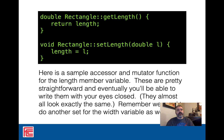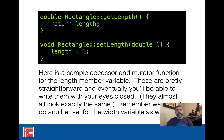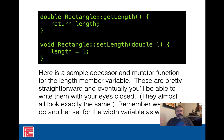The getter and setter implementation is the same every time. Get length just returns the length. Set length takes a double and sets length equal to that variable. But I could also put an if statement in there — if length is less than zero, just return and don't do anything, because I can't have a negative number on a rectangle. I have the ability to make these more complex to protect my objects so that they make sense in the end.